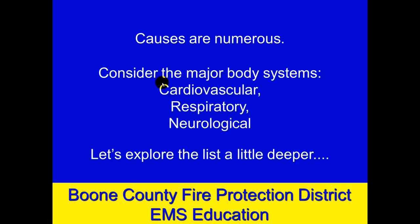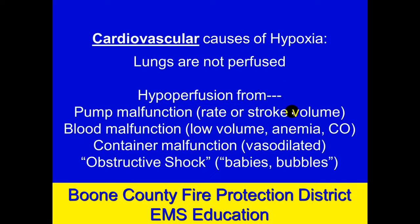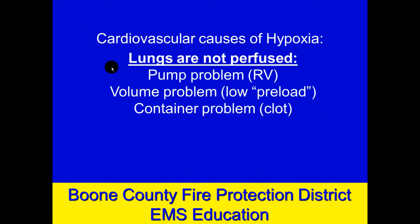We're going to talk about these in terms of these three major body systems and explore deeper one at a time. So the first one we'll take is the cardiovascular system. Perhaps it's a problem with the lungs or a problem systemically. How would the lungs not be perfused? Perhaps the right ventricle of the heart is not pumping effectively and blood's not being supplied to the lungs.